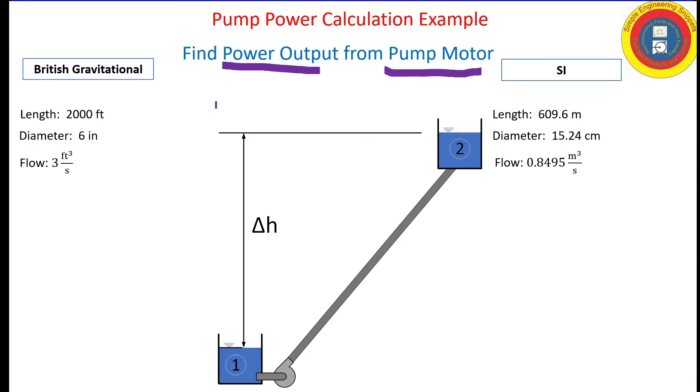Here's our input data. You'll note that the pump efficiency is 0.75 for both systems of units.